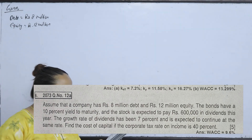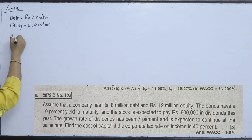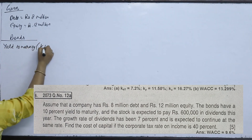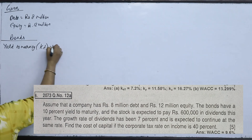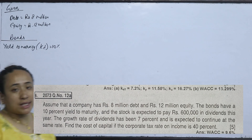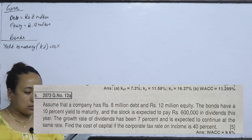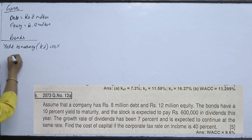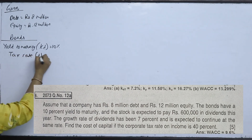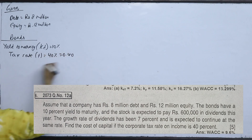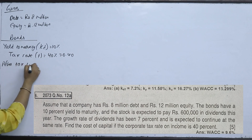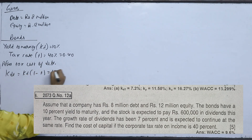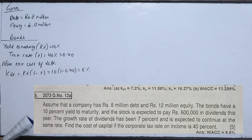The bond's yield to maturity is 10%. The tax rate is 40%. After-tax cost of debt KDT is calculated as 10% multiplied by (1 minus 0.40), giving KDT = 6%.